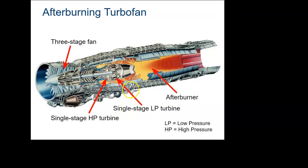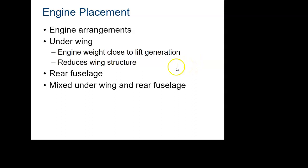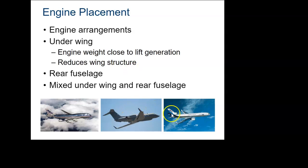Here's another example showing a three-stage fan, compressor, combustor, turbine, and exhaust. Engines can go in a lot of places: generally we see them under the wing, but they can go in the back or even in the vertical stabilizer. When designing an aircraft, the CG is a key consideration since engines are heavy. Here you see an MD-11 with a jet in the vertical tail, a business jet with engines mounted in the back, and a 747 with engines under the wings.